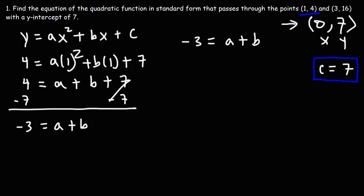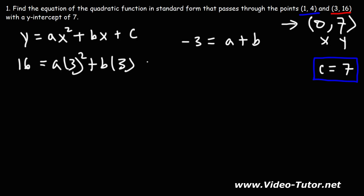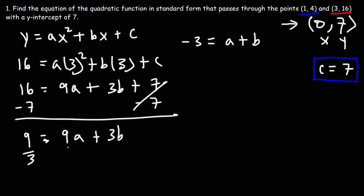We're going to need a system of equations to find the variables a and b. Now let's move on to the next point, (3, 16). So y is 16, x is 3. 3 squared, or 3 times 3, is 9. And then we have 3b plus c. We can replace c with 7. Now let's subtract both sides by 7 — 16 minus 7 is 9. So we have 9 is equal to 9a plus 3b. We can reduce this equation because each of these numbers are divisible by 3, so let's divide everything by 3. We have 3 is equal to 3a plus b.